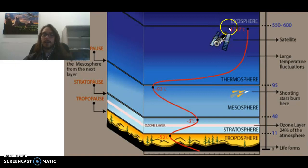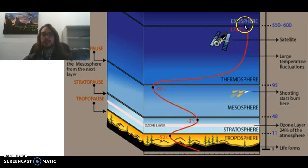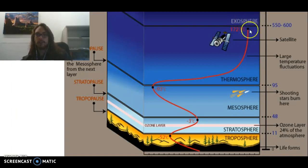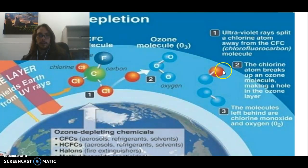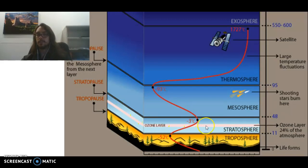Remember that satellites and space stations technically orbit in the thermosphere, but what quizzes and tests are looking for is the exosphere. Scientists scientifically kind of blend these two together because there's almost no differentiation — it's still hot up there, and there are very low amounts of molecules. The ozone layer is in the stratosphere. The stratosphere is our stabilizing layer, and that's basically due to the ozone layer.